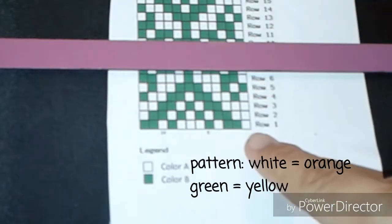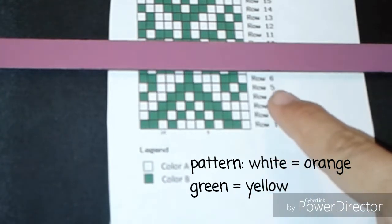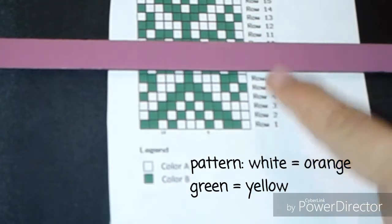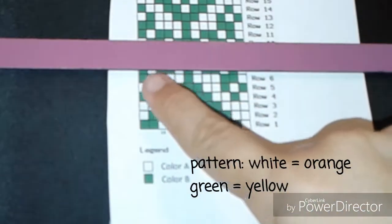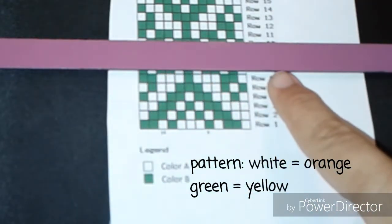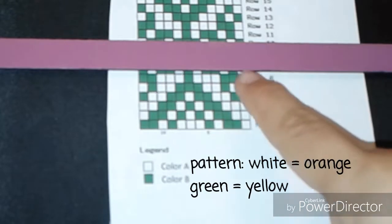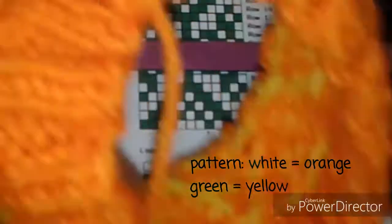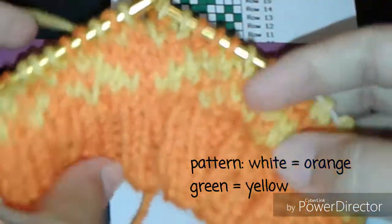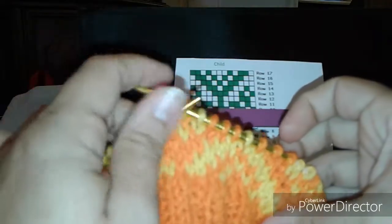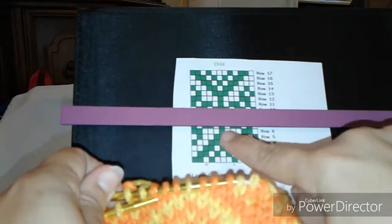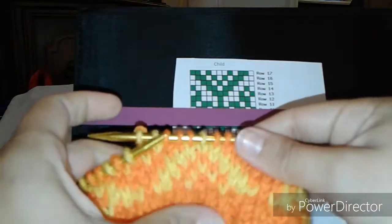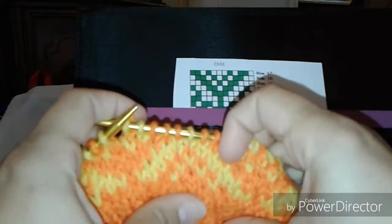Now I've already worked rows 1 through 5, and I'm in the middle of row 6. I have placed my magnetic strip above row 6 so I can see all my work up until then, which is what you see in the little hat. You can see this on the chart—the green on the chart is yellow on the hat.